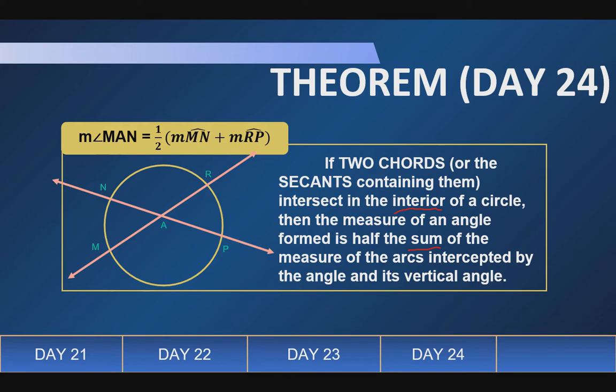So, ito po yung formula natin para mahanap natin yung angle MAN. Kunin, hanapin muna natin or kunin natin yung sum ng arc MN tsaka ng arc RP. Yung intercepted arc ng kanyang vertical angle. When we say vertical angle, ito yung nakatalikuran niya. So, ang vertical angle ng arc, ay ng angle MAN ay angle PAR. So, sila yung nakatalikod. Therefore, ang angle MAN is equal sa or congruent sa angle PAR. Or, pero hindi porket magkatalikuran sila, equal na din dapat yung intercepted arc nila. Wala naman po kasi sila sa center. Hindi sila central angle. So, kapag wala sila sa center, malamang sa malamang hindi mag-equal or usually hindi mag-equal yan.